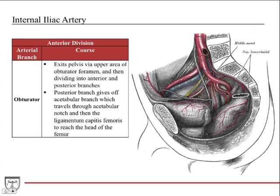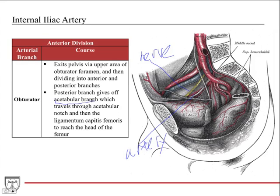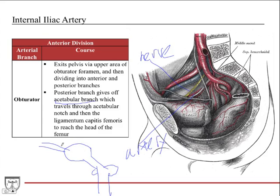The obturator artery is pretty simple to ID in the body. You have your obturator nerve here, and then you have your obturator artery traveling right with it — same name as the nerve. They both exit the pelvis via the upper area of the obturator foramen, and then divide into anterior and posterior branches of the artery to supply the lower limb. The posterior branch gives off the acetabular branch, which is clinically important — it travels through the acetabular notch and the ligamentum capitis femoris to reach the femoral head. Disruption of this can lead to necrosis of the femoral head.